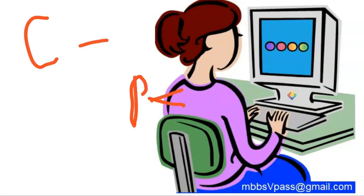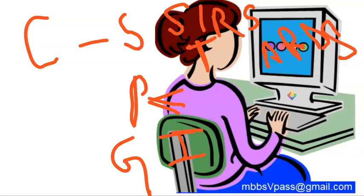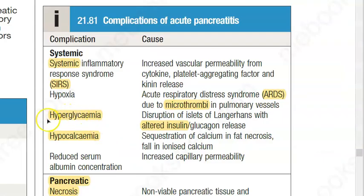To summarize the complications: pancreas-wise — pseudocyst, necrosis, abscess, pancreatic ascites, pleural effusion. GI — duodenal obstruction, upper GI bleed, obstructive jaundice. Systemic — SIRS, thromboembolism leading to ARDS, reduced albumin due to increased capillary permeability, hyperglycemia, and hypocalcemia.